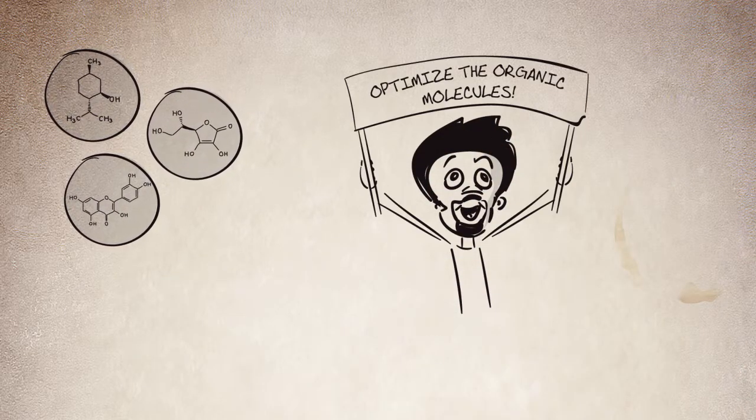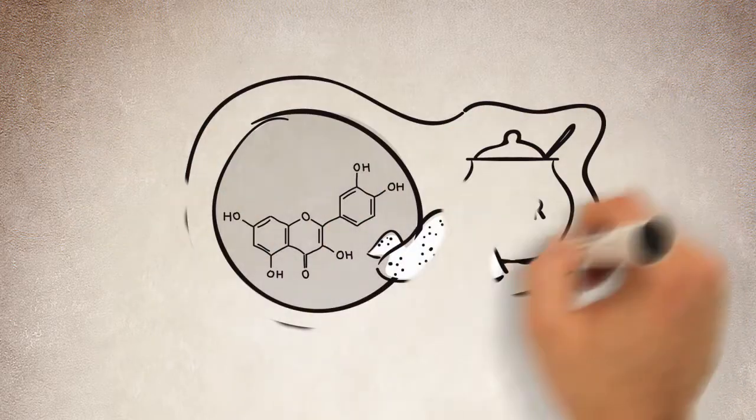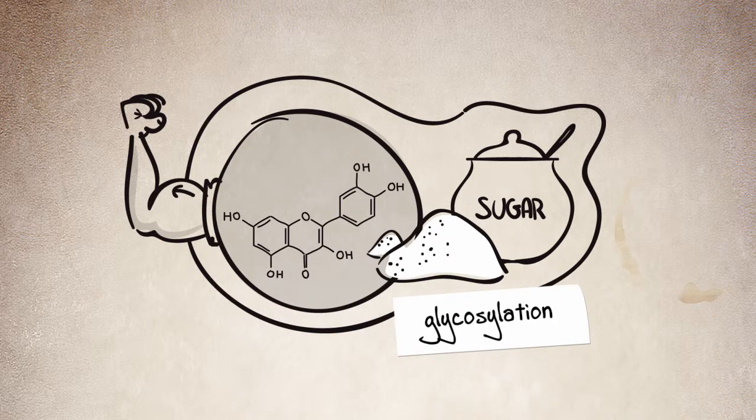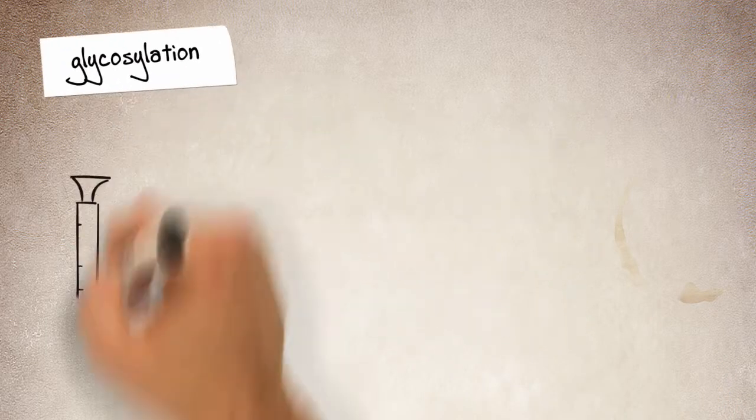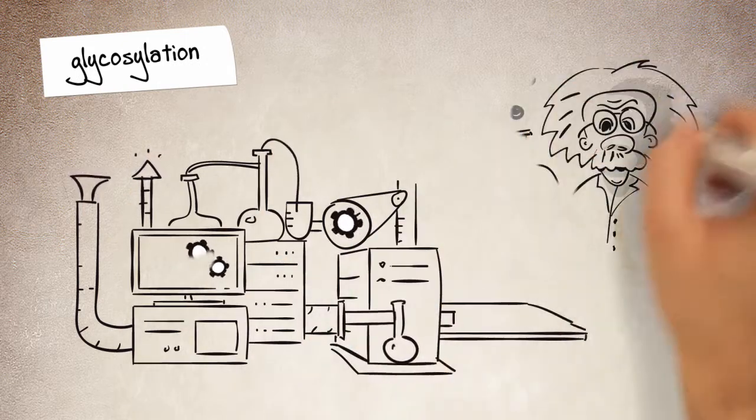We can optimize the molecules. One solution is to couple them to sugar in order to increase their value. This process is known as glycosylation. Up until now, glycosylation is mostly accomplished via a chemical process.